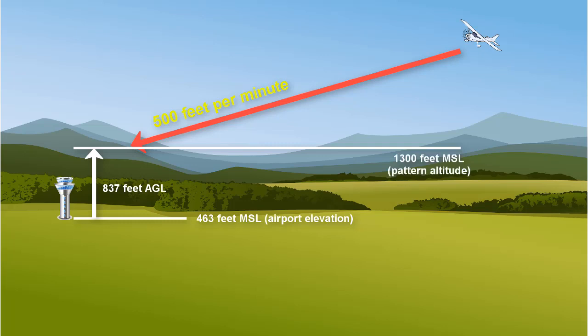Next we need to look at our current cruise altitude, which is 6000 feet. We need to subtract the pattern altitude of 1300 feet from the cruise altitude of 6000 feet, which gives us 4700 feet. This is the number of feet we need to descend to get to pattern altitude.